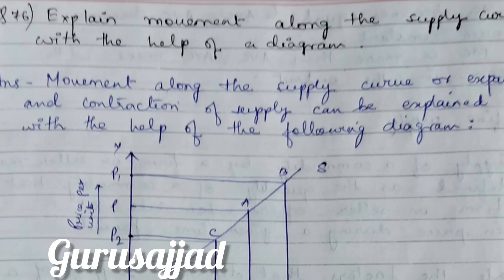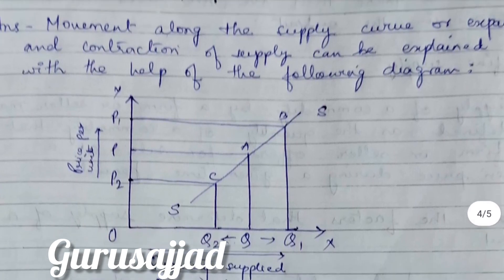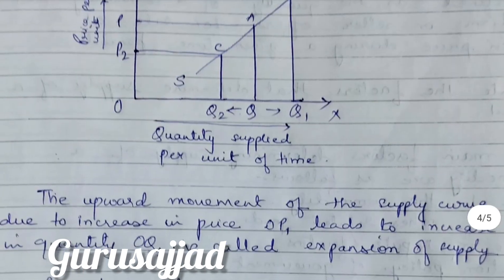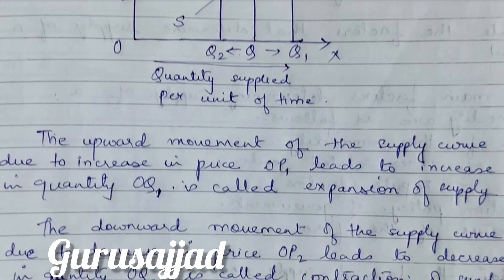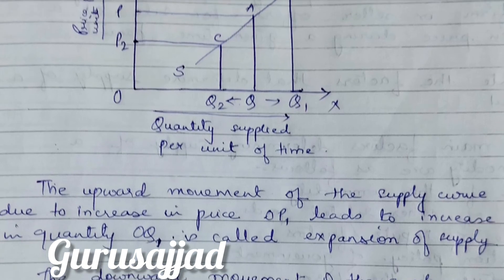Next question: Explain movement along the supply curve with the help of a diagram. Movement along the supply curve — expansion and contraction of supply — can be explained as follows. In the diagram, SS is the supply curve. P3 is the original price and quantity. As the price increases to P1, quantity increases to Q1 — this upward movement due to increase in price leading to increase in quantity is called expansion of supply.